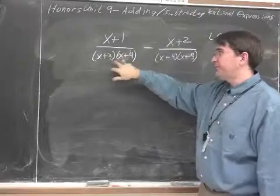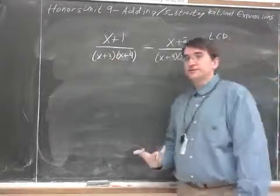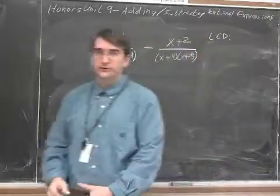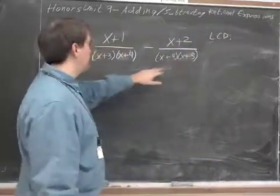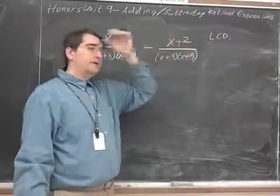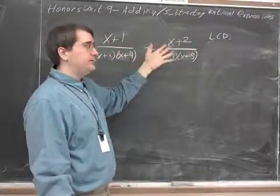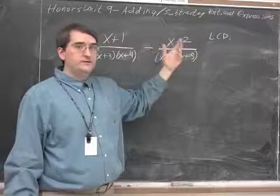And some of them are like this one, where there's two in each. It doesn't actually matter how many binomials are in your denominator, if there's two, three, or just one. Your lowest common denominator is just going to be a list of all of the unique binomials.